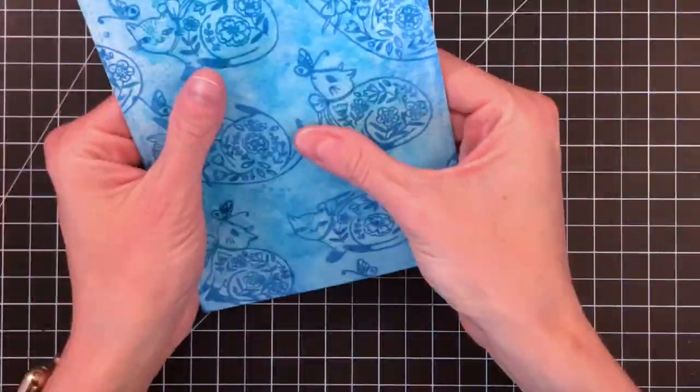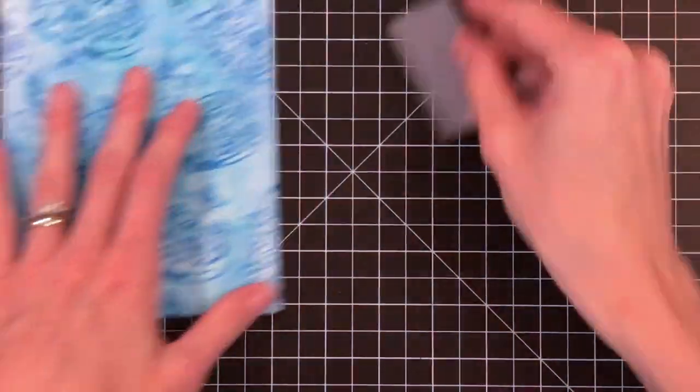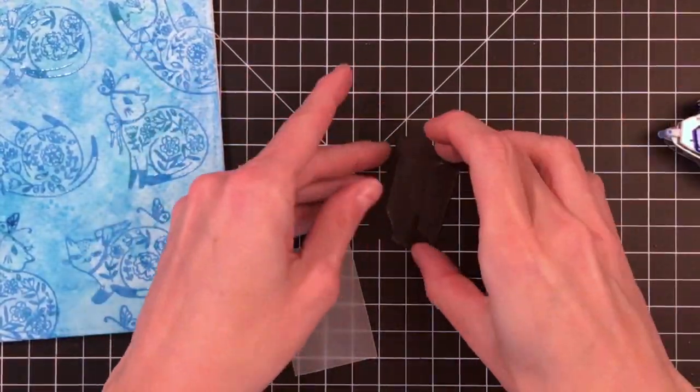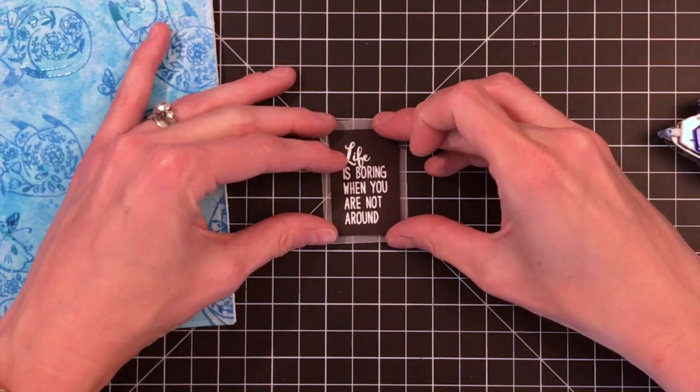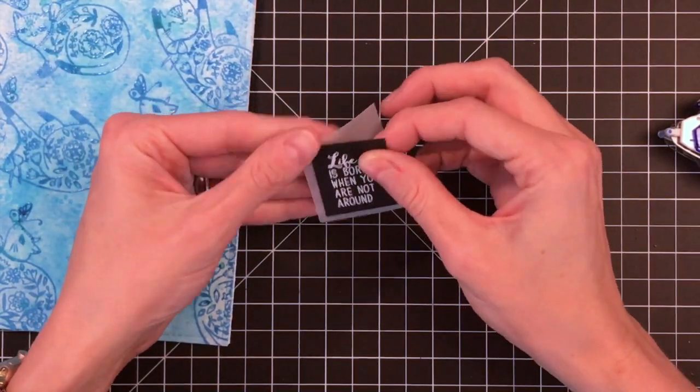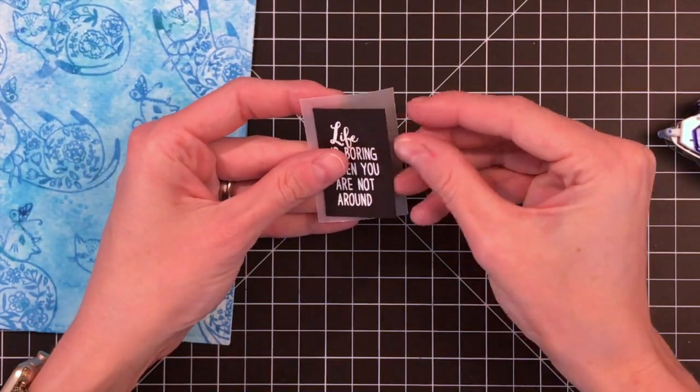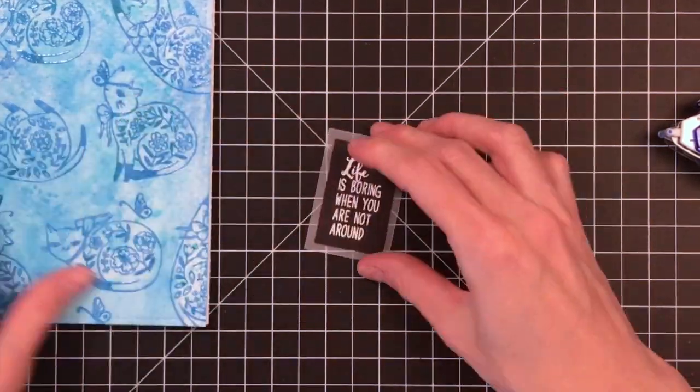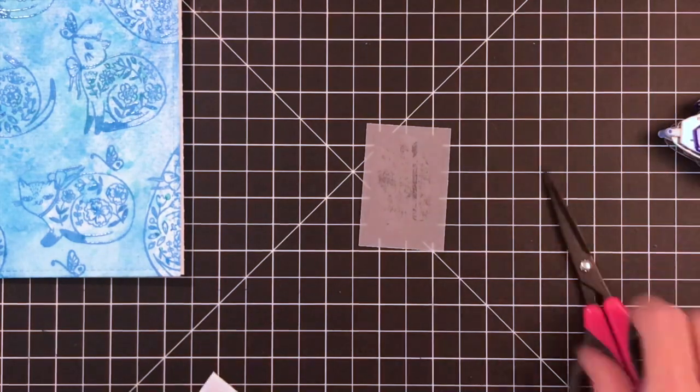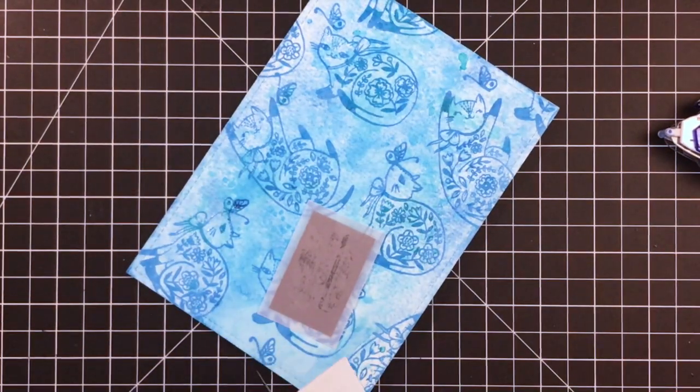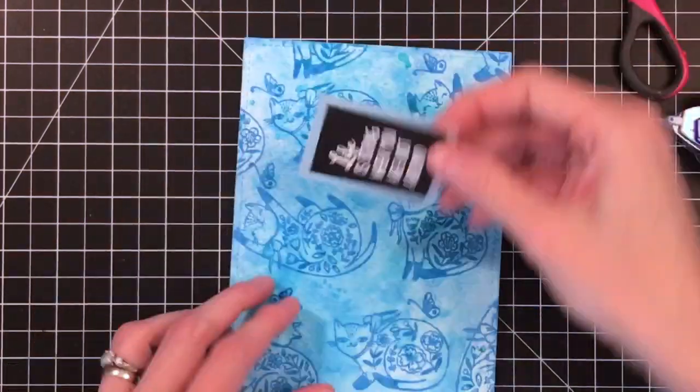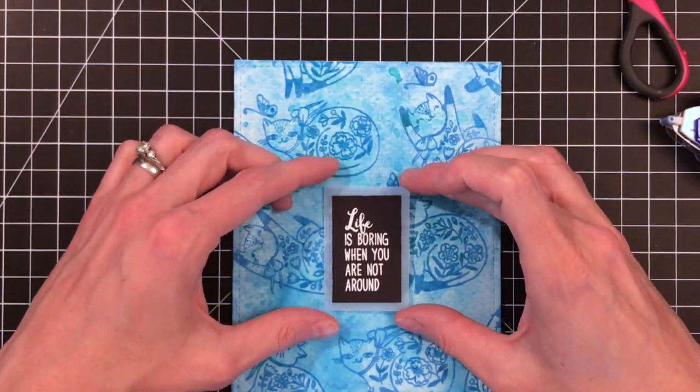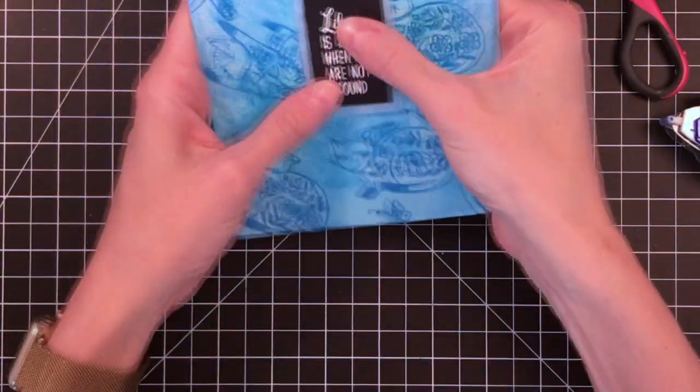To make a 5x7 card, all you have to do is cut a 10x7 rectangle and then score it down the middle at 5 and then fold it in half and you'll have a 5x7 card. And now I am adhering the sentiment onto the vellum. And then I will adhere the vellum onto my card. I'm going to use a little foam tape to give it a little bit of dimension. And then I'll stick that down. And that's my card.